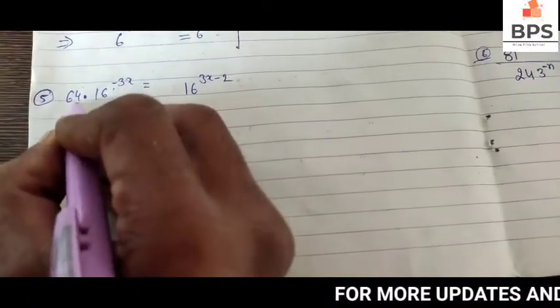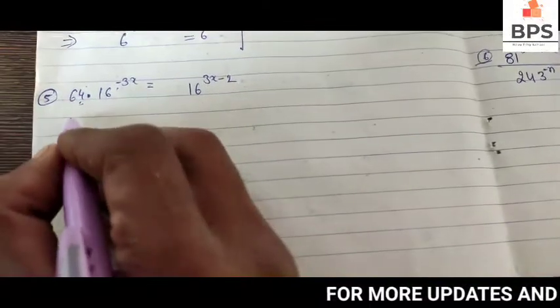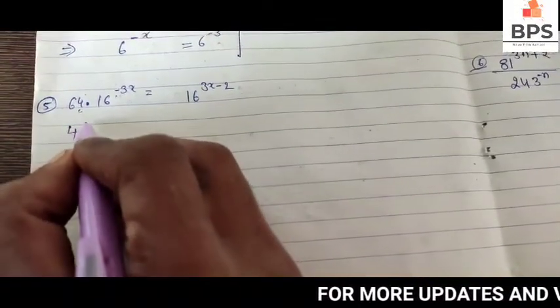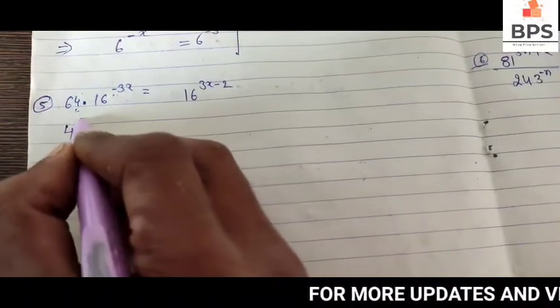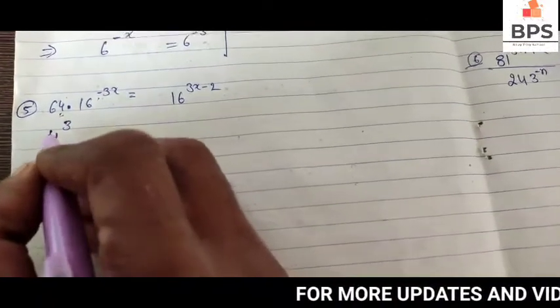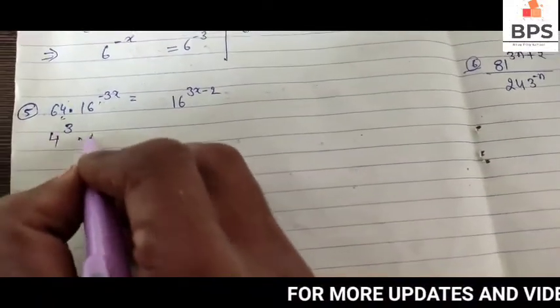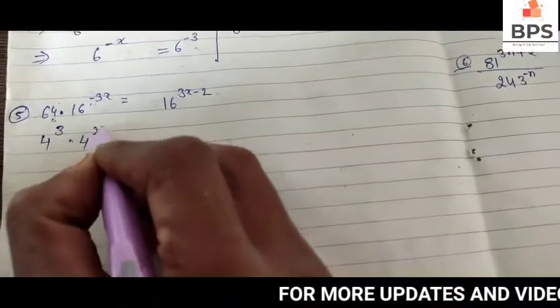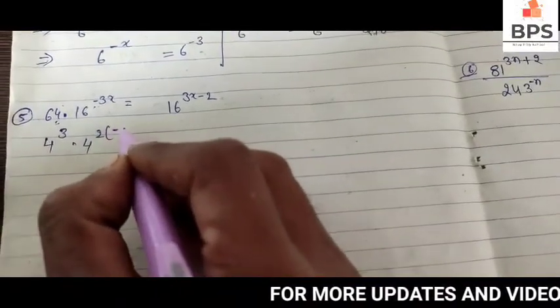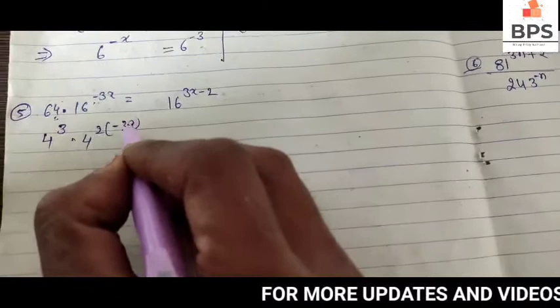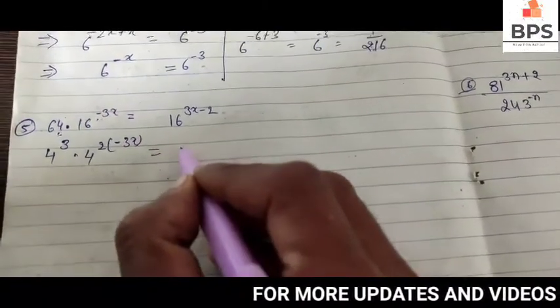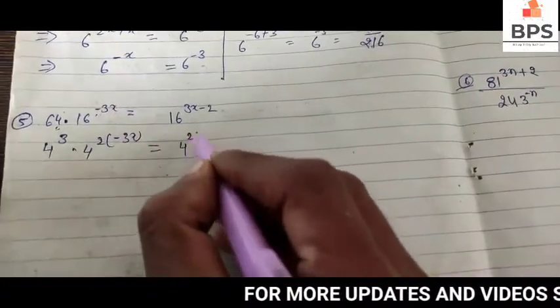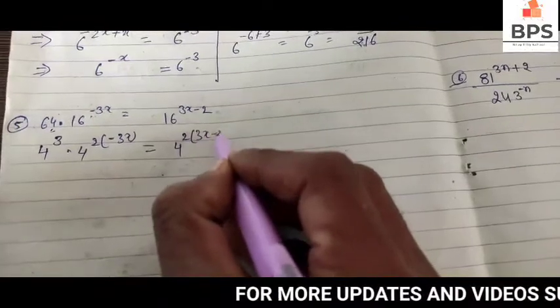What is 64? We can write it as 4 cubed. So 4 cubed times, and 16 is 4 squared, so 16 to the minus 3x equals 4 squared to the power 3x minus 2.